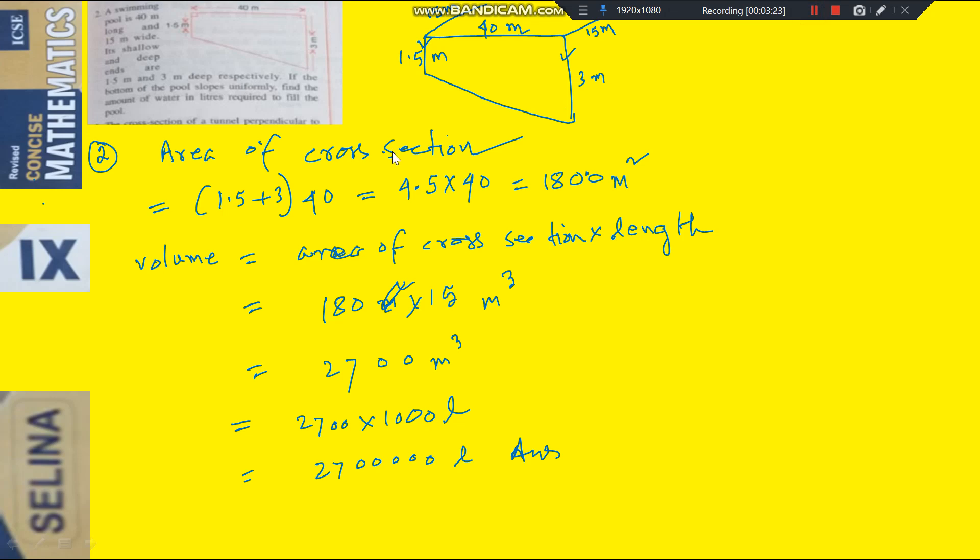Now see, actually, I have made mistake here. Area of cross section, half into. Half into sum of parallel sides, into distance between them. So, here will be half into.